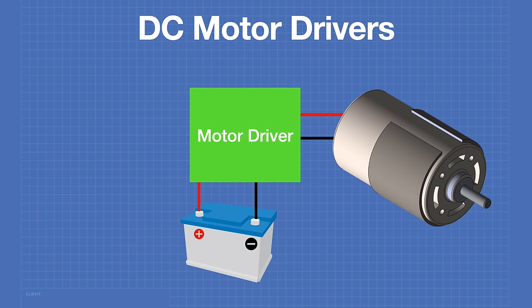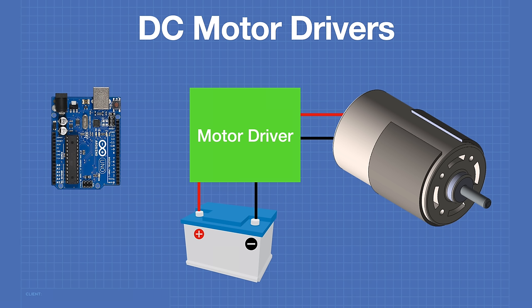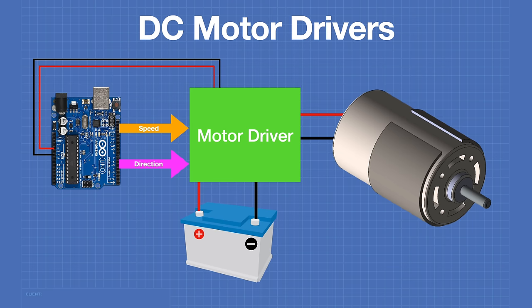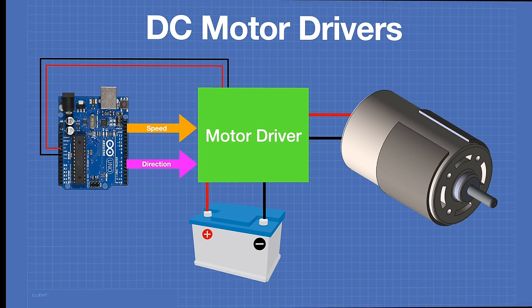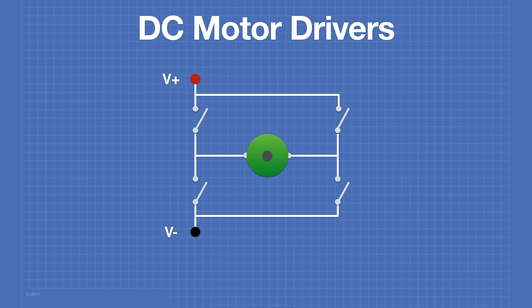A motor driver is inserted between the power source and the motor, and it allows control signals from a microcontroller to control the motor. There are signals for speed and signals for direction. Some motor drivers also require a logic voltage that comes from the microcontroller, which is separate from the motor voltage. The motor drivers we're looking at today use an H-bridge configuration, the most popular configuration for controlling the speed and direction of DC motors.